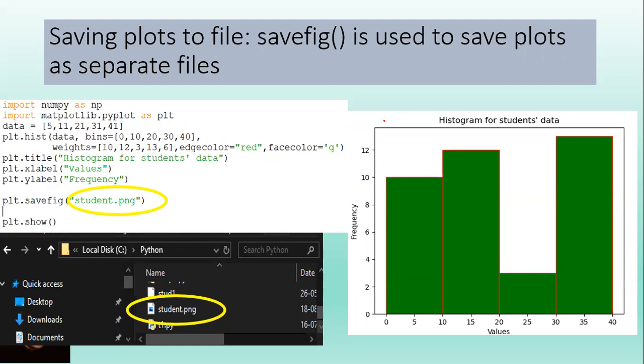Saving plots to file. Now suppose you have a plot - means a histogram or a bar graph - you have to save separately just like a jpg file. We have savefig function for this. See here, write plt.savefig and write a proper name like student.png. PNG files open directly.